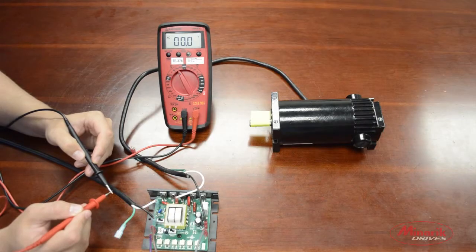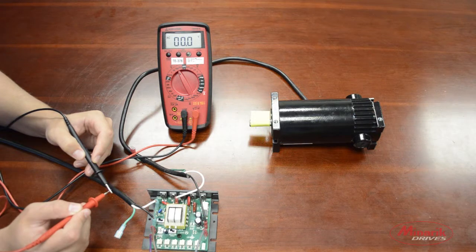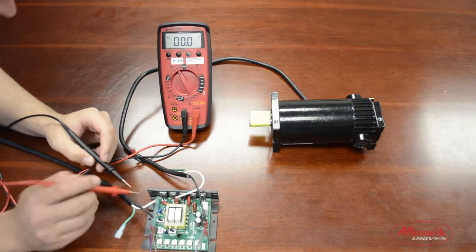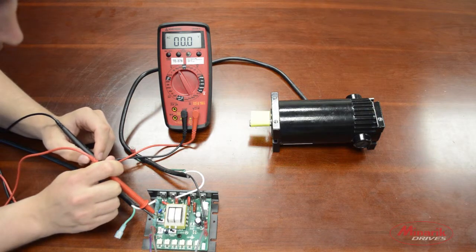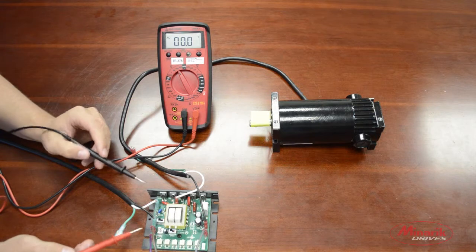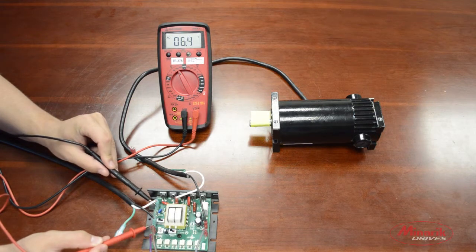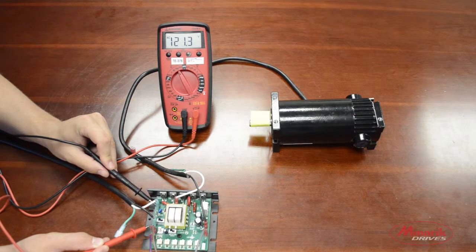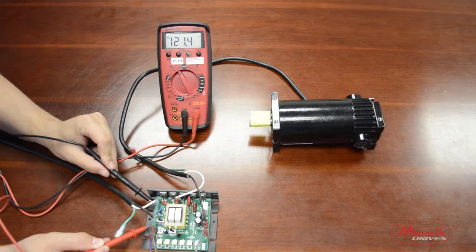The first thing you want to check is to make sure that the line is supplying voltage to the drive. We're using 115 ACN, and we have the switch for input voltage set to 115. Make sure that switch is set correctly. You can measure the leads L1 and L2 and see that we have 120 volts AC being supplied to the drive. So it seems our line voltage is good.